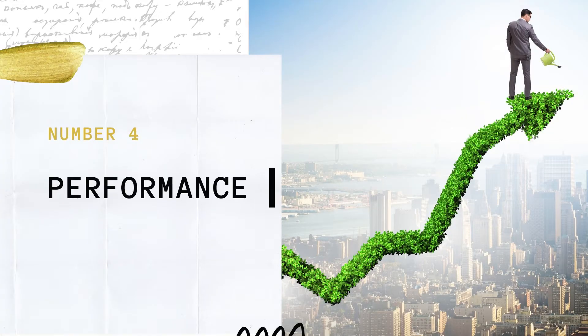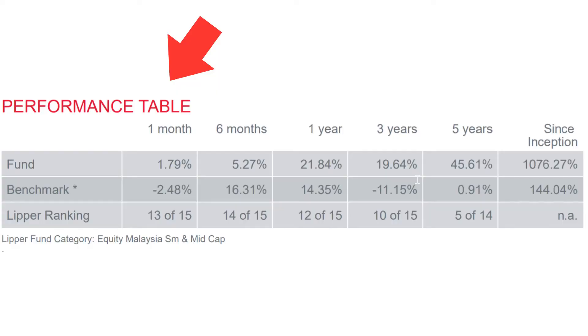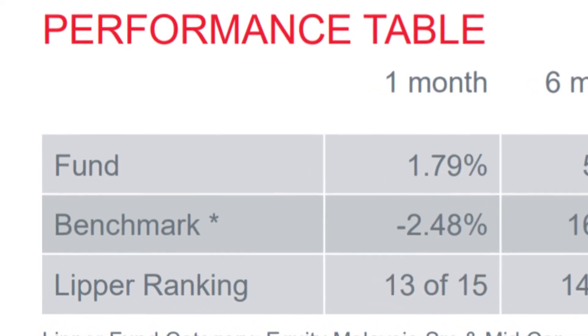Number 4: Performance. Before we invest in anything, we look at the past performance of the fund. Unless it is a new fund, we wouldn't have that data. But if it's a fund that has been launched for more than one year, you can see the returns accumulated over one month, 6 months, 12 months, and so on. The return stated under the one-month column indicates that on average, investors who have invested in this fund for one month are earning an average return of that amount.